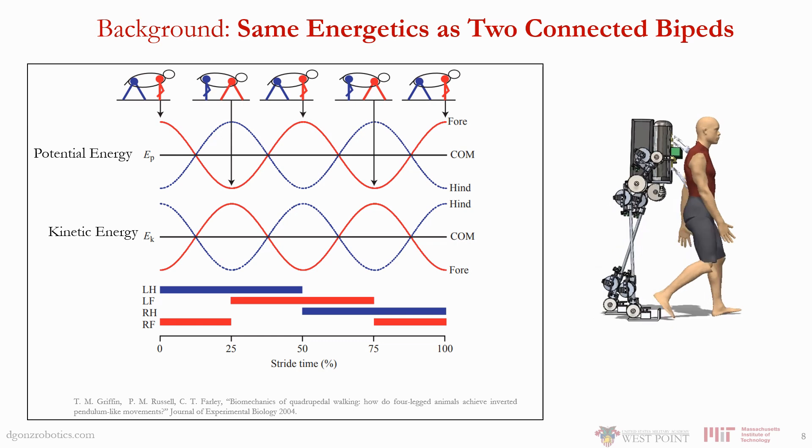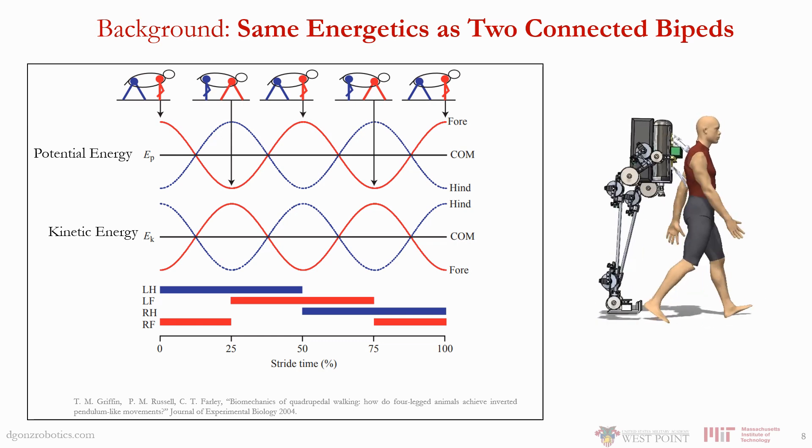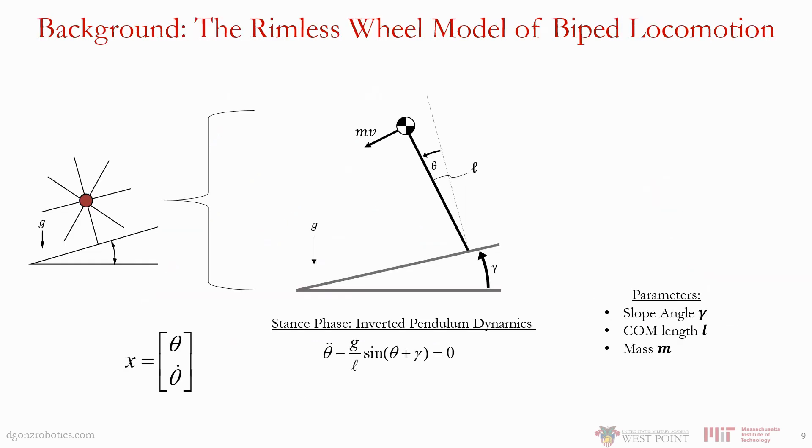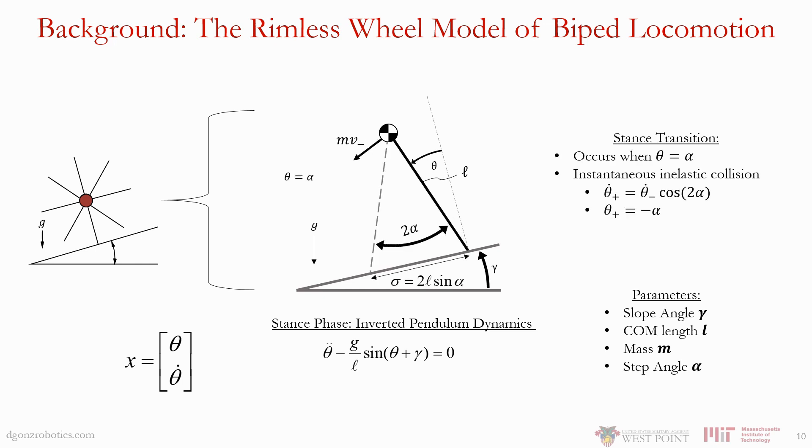To understand our dynamic model for this two biped system, we must first understand the canonical rimless wheel. This passive model captures the natural dynamics of bipedal walking using only gravity to inject energy into the system. It's essentially an inverted pendulum on a sloped surface. We provide a constant angle, a forward lean, when the wheel takes a step with the other foot. The landing foot becomes the new pivot point, only angular momentum about this new point is conserved. The remaining momentum is sufficient to vault the pendulum over and continue the walking cycle.